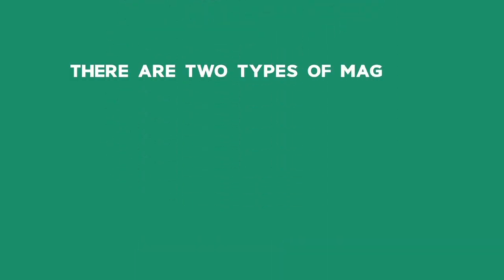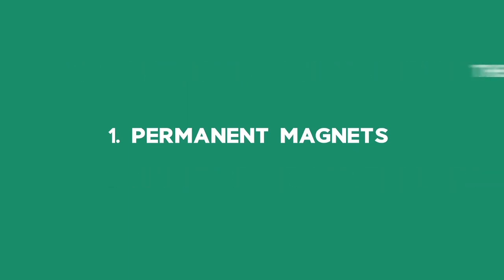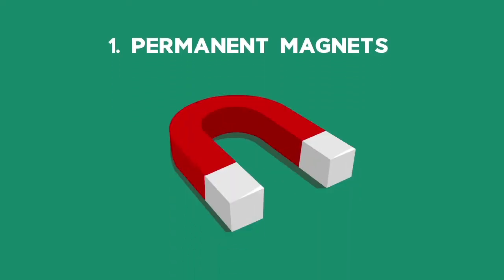There are two types of magnets: permanent magnets and electromagnets. Permanent magnets are common and are made of iron, cobalt, and nickel alloys.